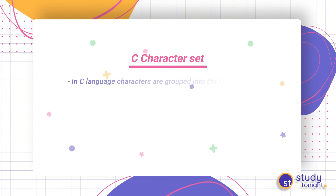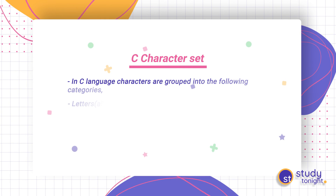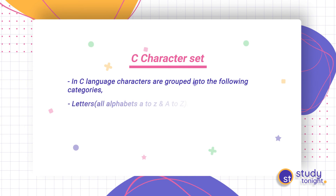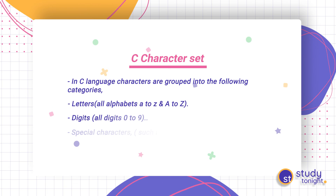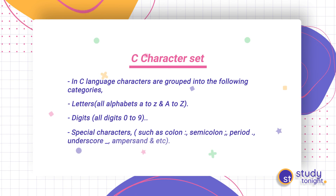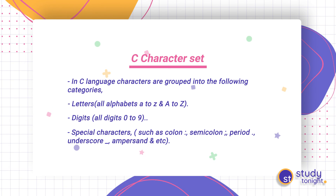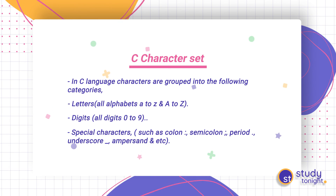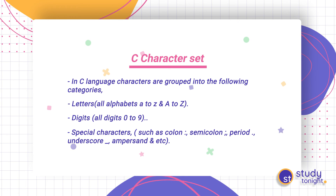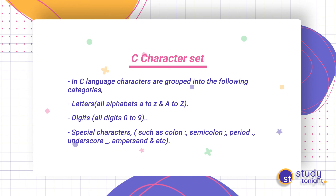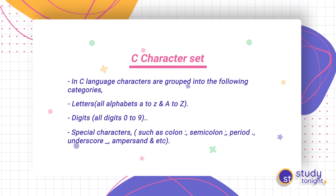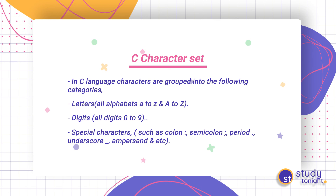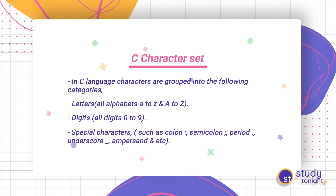What is the character set? In C language, characters are grouped into the following categories: letters, digits, special characters, and white spaces. These all together form the character set in C.